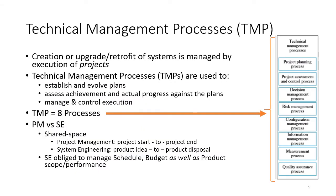As mentioned in the previous video, system engineers organize themselves to build, create, upgrade, and retrofit systems by calling them projects. So the project is our unit of measurement, a unit of control. The technical management processes are used to establish and evolve plans for these projects, assess achievement and actual progress against the plans, and manage and control execution.